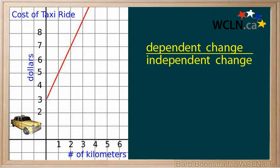Rate of change is calculated by dividing the change in the dependent variable by the change in the independent variable. That is, the change in y is divided by the change in x.